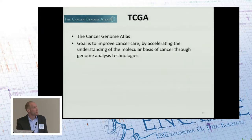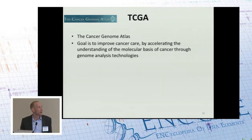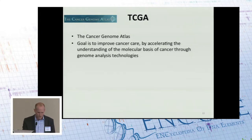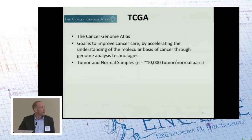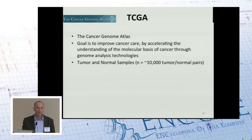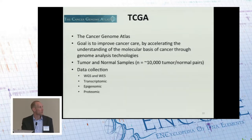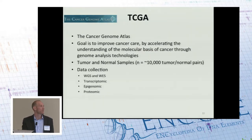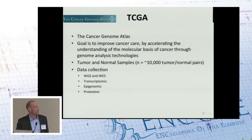Next up is a very well-known resource — the Cancer Genome Atlas. The goal of the Cancer Genome Atlas is to improve cancer care by accelerating the understanding of the molecular basis of cancer through genomics techniques. This is funded jointly by NCI and NHGRI. They have a very large sample set — 10,000 matched tumor and normal pairs — and for many tumor types they have several hundred tumor-normal pairs that can be compared. They collect a variety of data types, primarily whole genome sequencing and whole exome sequencing, as well as transcriptomic data, and more limited epigenomic and proteomic data.